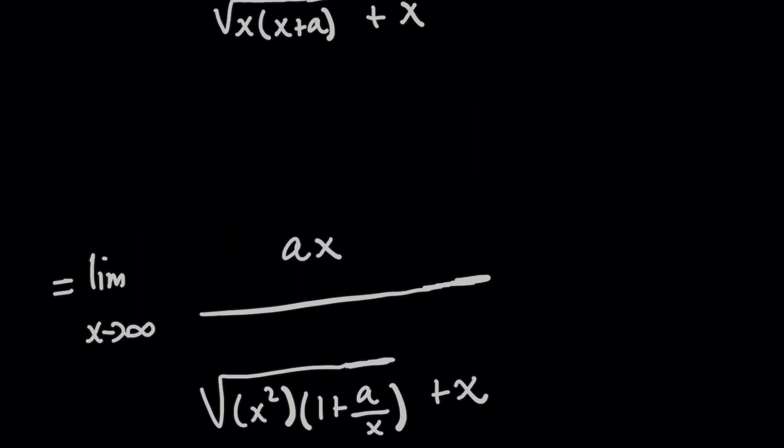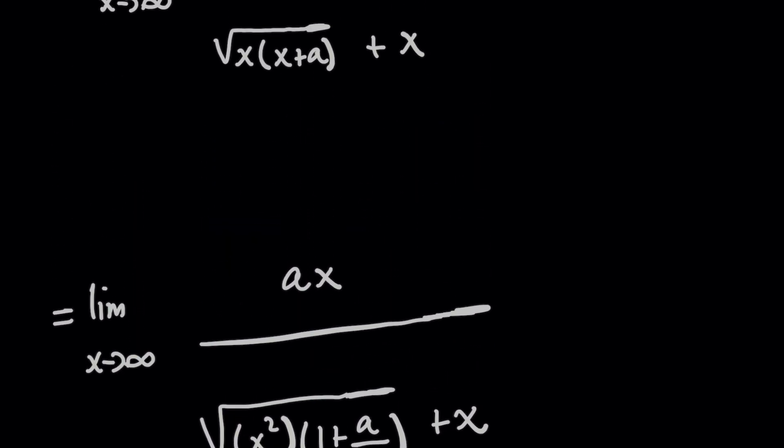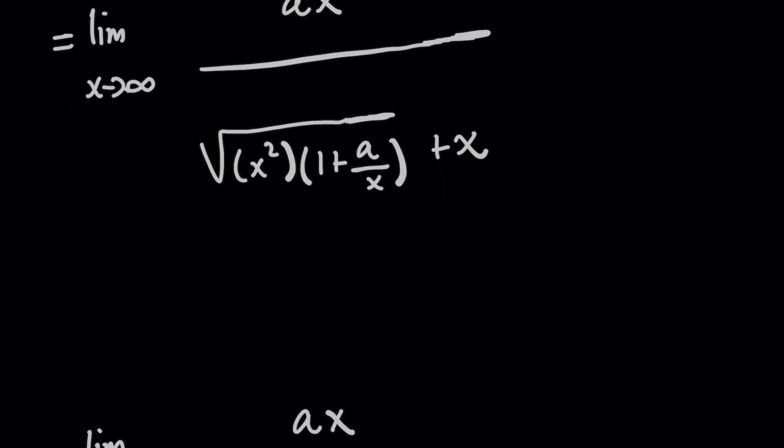Now instead of plus a, if we want to get xa and we factor out an x squared, then we can just rewrite this as a over x. Try it for yourself, multiply it through, you'll get the same results. And this is super nice, because now, if you remember with radicals, there's a property.